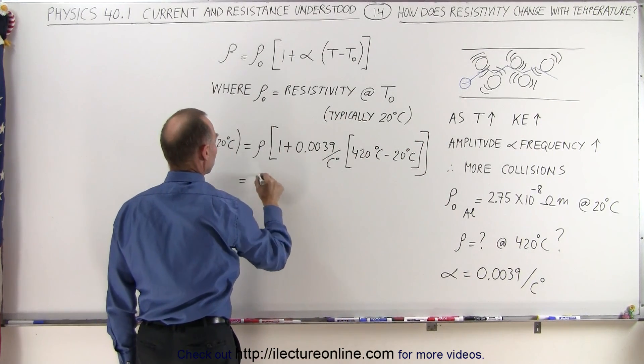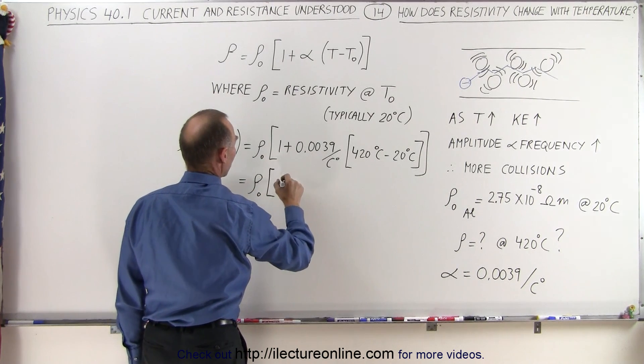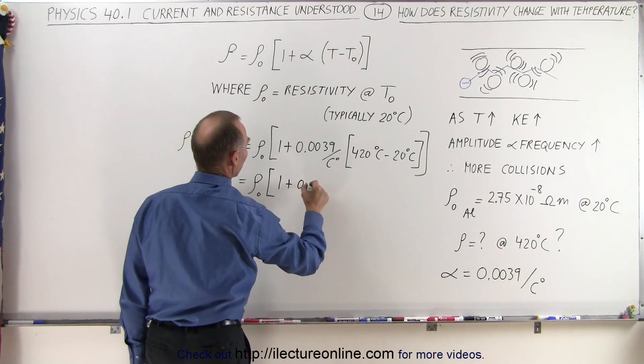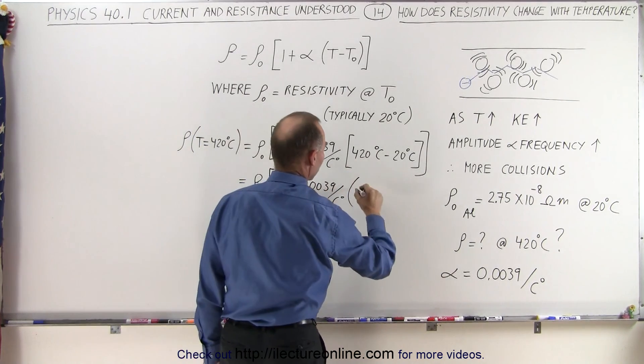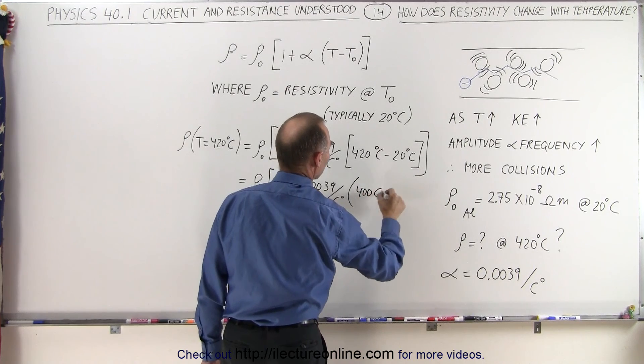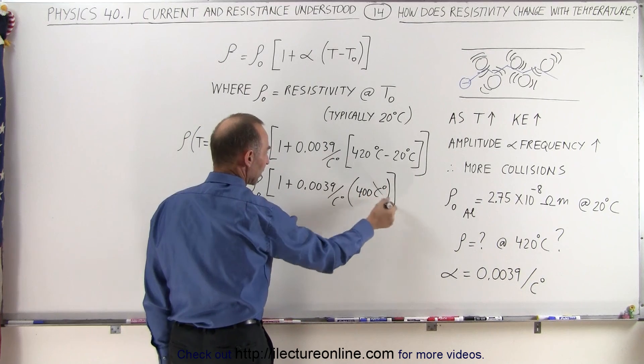So this would be equal to the resistivity at 20 degrees, times 1 plus 0.0039 per centigrade degree, times the difference here would be 400 centigrade degrees.